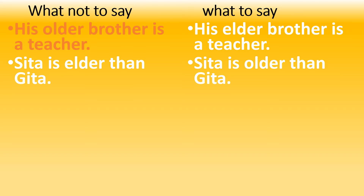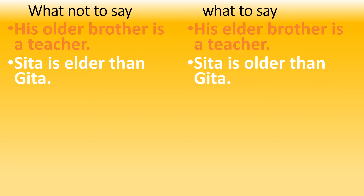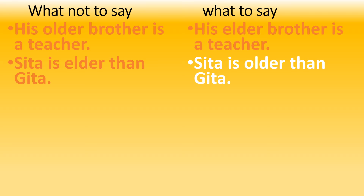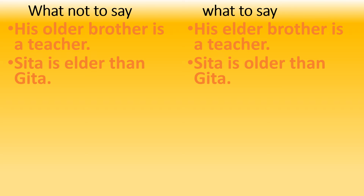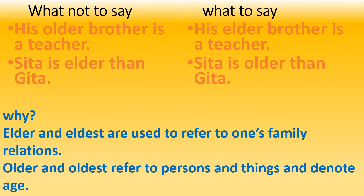Incorrect: 'His older brother is a teacher.' Correct: 'His elder brother is a teacher.' Incorrect: 'Setha is elder than Getha.' Correct: 'Setha is older than Getha.' Why? Elder and eldest are used to refer to one's family relations. Older and oldest refer to persons and things and denote age.